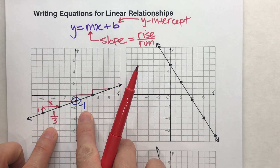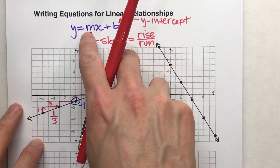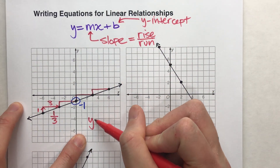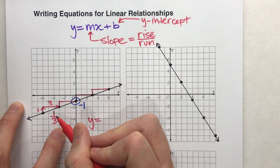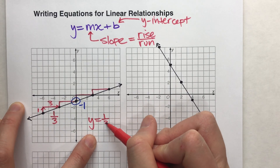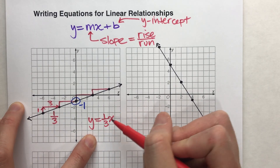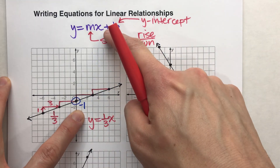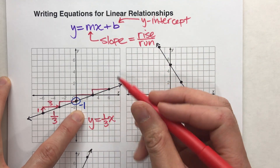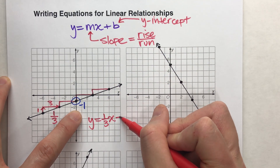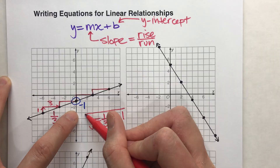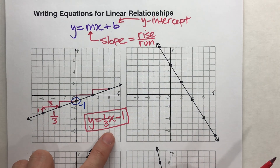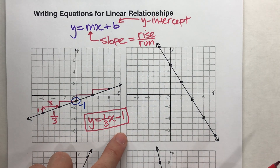Now that I have those two numbers, I can just stick them into this equation. My equation is y equals my slope, one-third, times x, plus my y-intercept. But my y-intercept is negative 1, so instead of writing plus the number, I'll write minus 1. There's my equation: y equals one-third x minus 1.